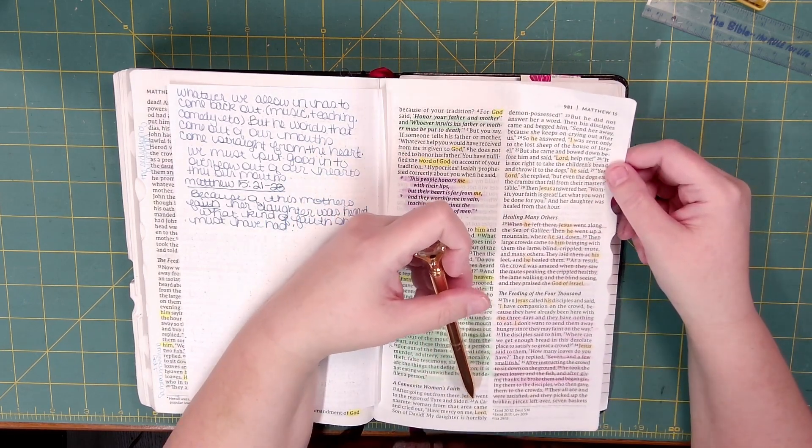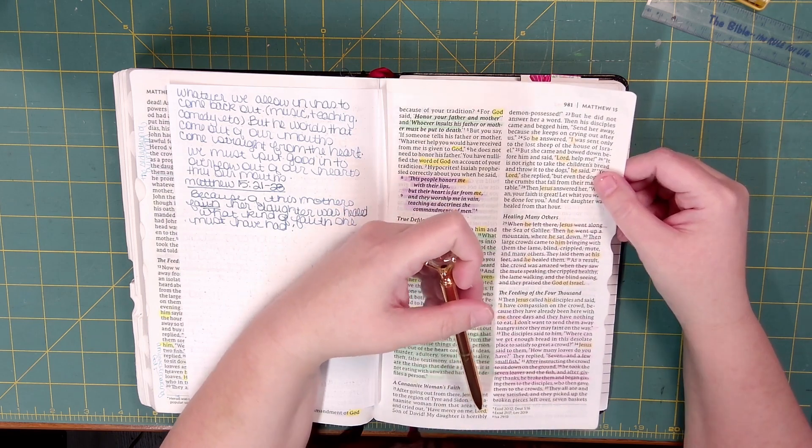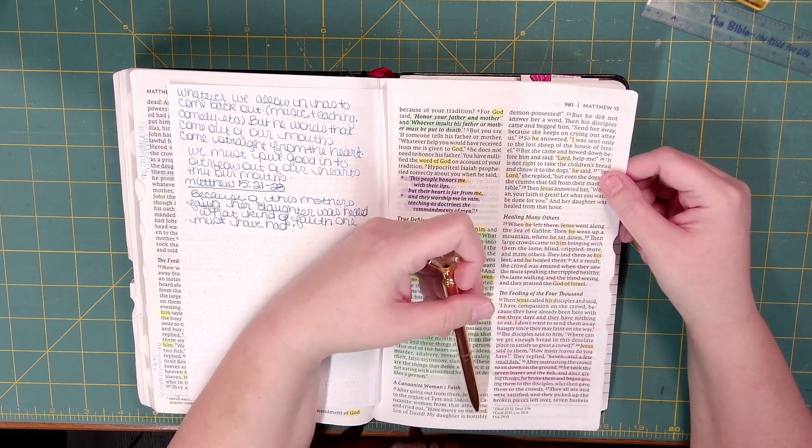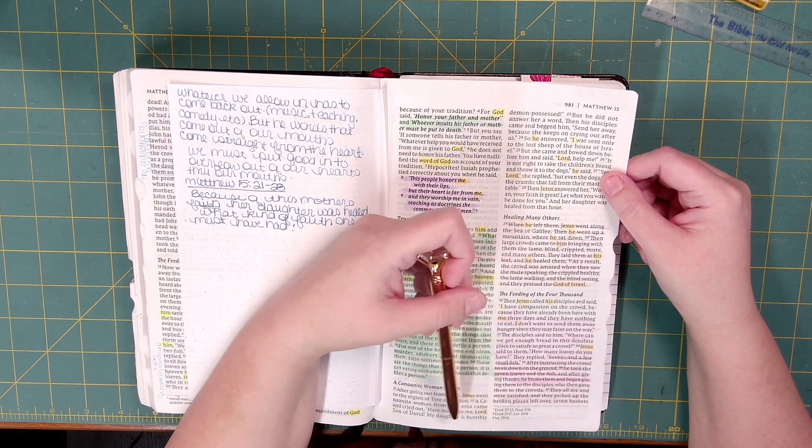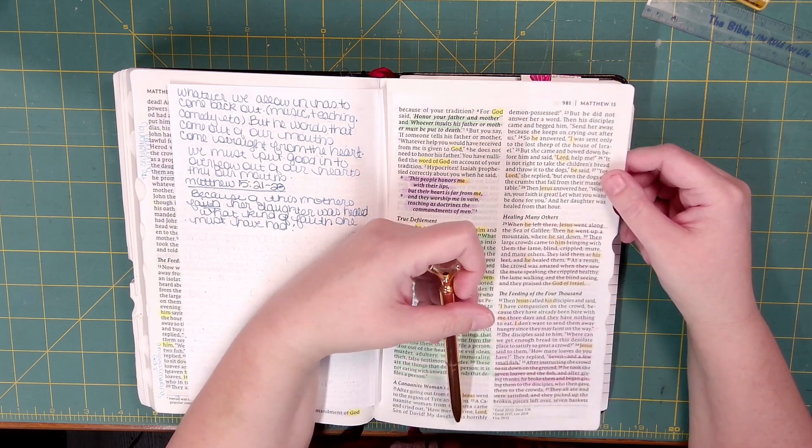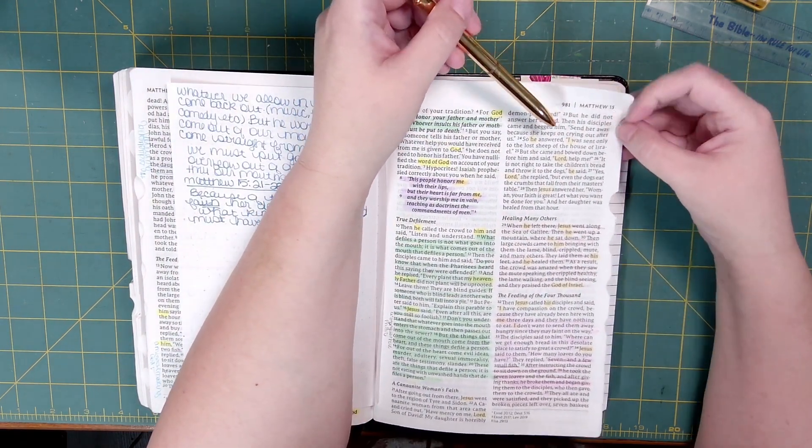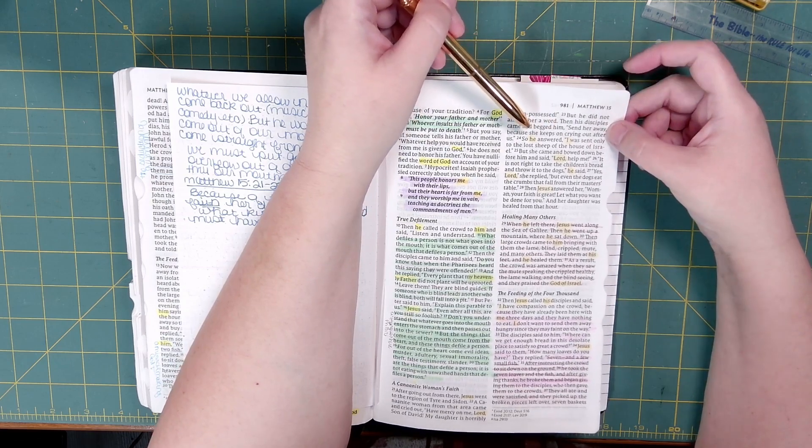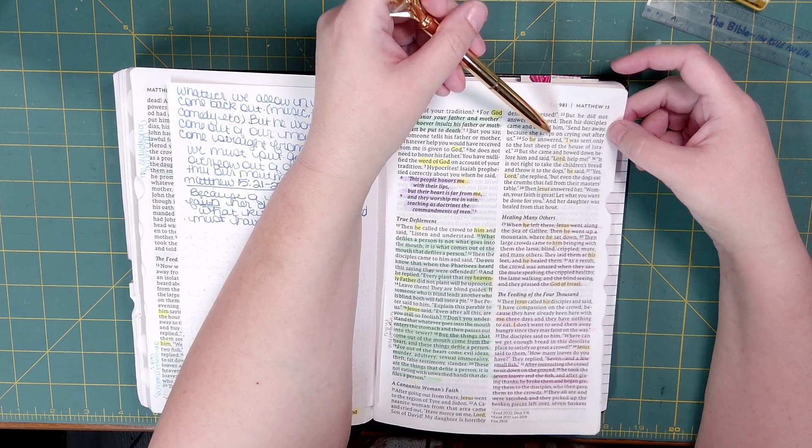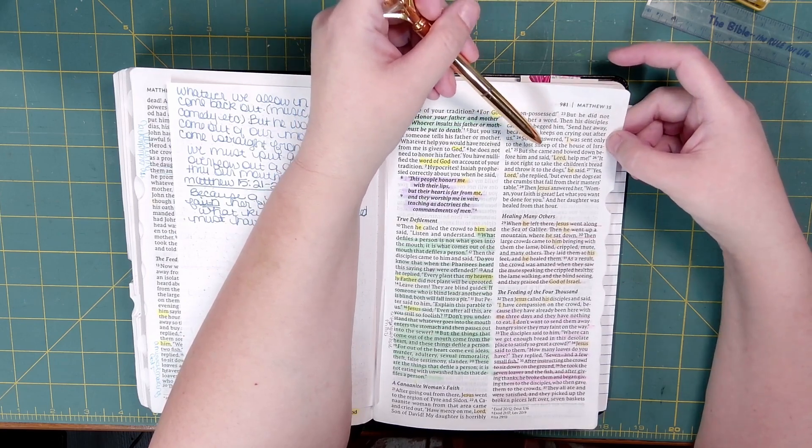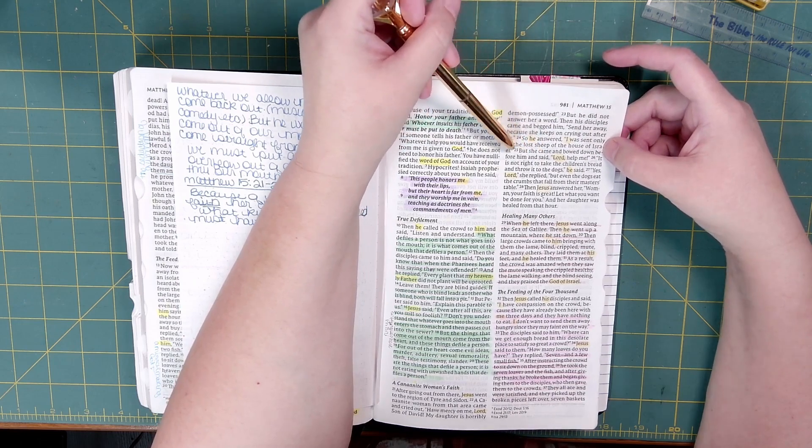After going out from there, Jesus went to the region of Tyre and Sidon. A Canaanite woman from that area came and cried out, Have mercy on me, Lord, son of David. My daughter is horribly demon-possessed. But he did not answer her a word. Then his disciples came and begged him, Send her away, because she keeps on crying out after us. So he answered, I was sent only to the lost sheep of the house of Israel.